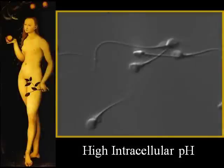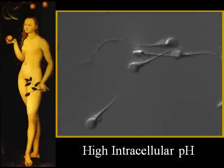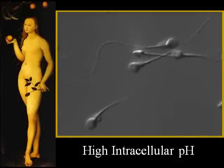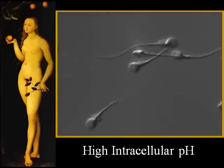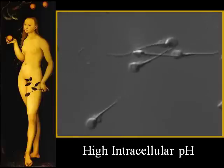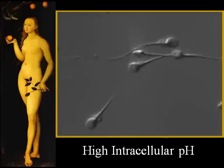This low intracellular pH keeps mature spermatozoa quiescent and prevents them from burning out prematurely. In contrast, when spermatozoa are ejaculated and introduced into the female reproductive tract, the new environment causes a progressive increase in sperm intracellular pH, which results in progressive activation of sperm motility and fertilizing ability.